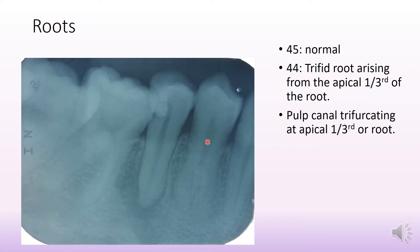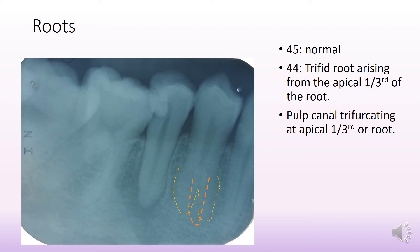When looking at the roots, it is important to note that not only the tooth of interest but the adjacent tooth also shows interesting findings. The root of 45, our tooth of interest, looks normal. However, when you look at 44 you can see the outline of a bifid root, and if you look closer you will also see the third root — and hence you are looking at a trifid root.